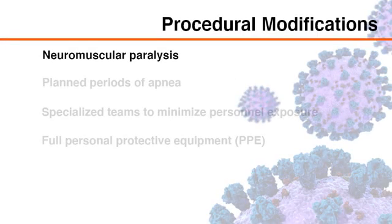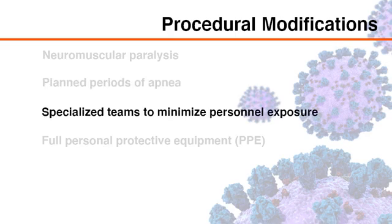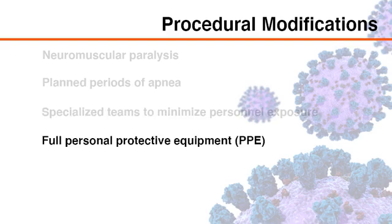Percutaneous tracheostomy procedures for patients with COVID-19 include the use of neuromuscular paralysis to minimize the cough reflex, as well as periods of apnea when the ventilatory circuit is considered to be open. The procedure requires highly specialized teams that minimize the number of personnel, as well as full personal protective equipment, or PPE.